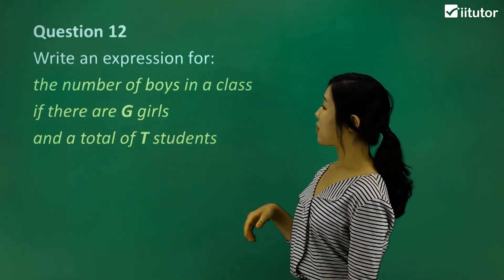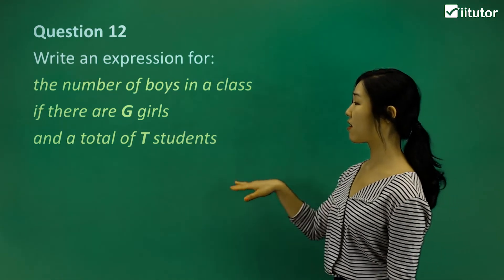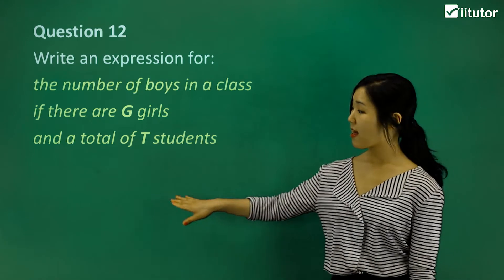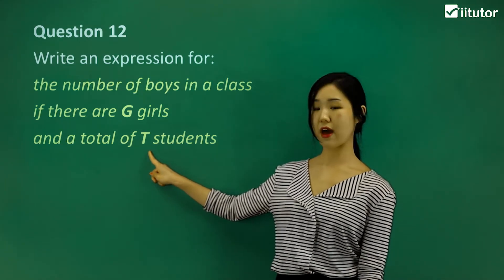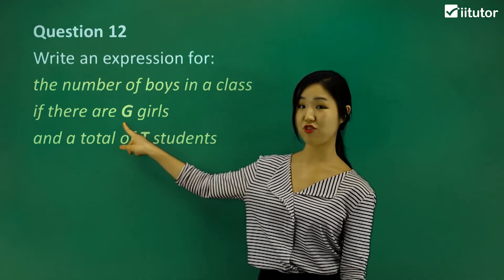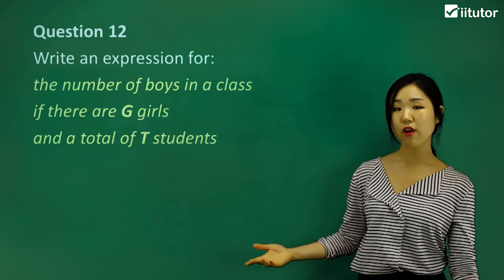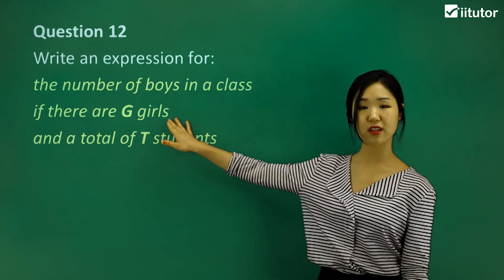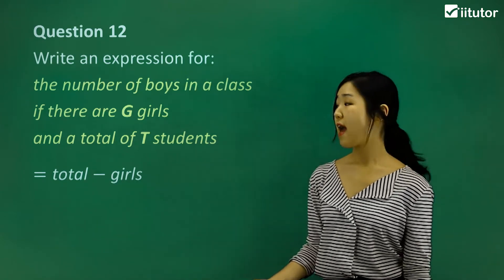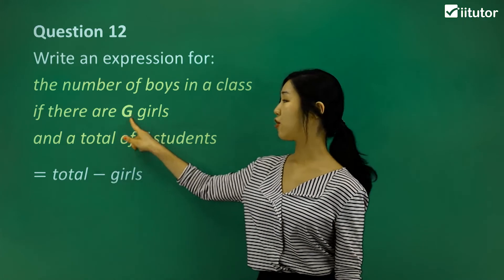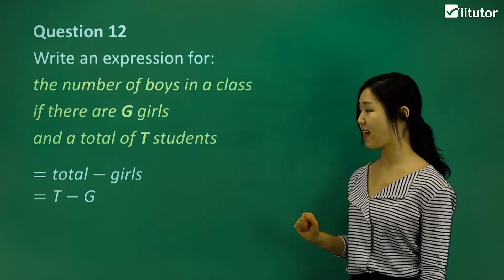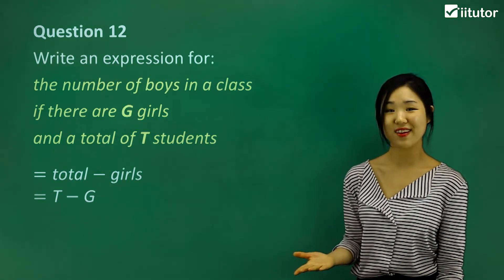Question twelve: write an expression for the number of boys in a class if there are g girls and a total of t students. We want to know how many boys there are. There's a total of t students — we use this variable for the total number of students. In that class there are g girls, so g is the variable for number of girls. If there are g girls, we simply subtract the girls from the total number of students: t minus g. That would be the simple expression for boys.